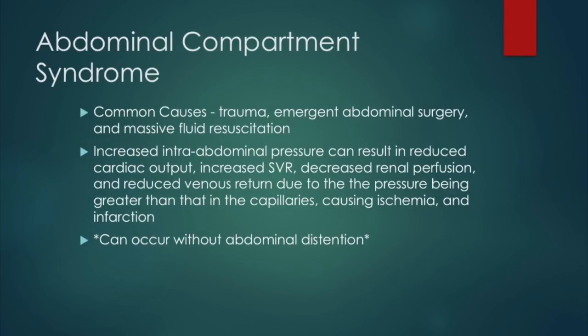One of the things that can develop as an emergency is abdominal compartment syndrome. Common causes of ACS include trauma such as a gunshot wound, emergent abdominal surgery, and massive fluid resuscitation. Anytime you have increased intra-abdominal pressure, this can result in reduced cardiac output, increased systemic vascular resistance, decreased perfusion to the kidneys, and reduced venous return, causing ischemia and subsequent infarction of organs. It's important to note that this can occur without abdominal distention.